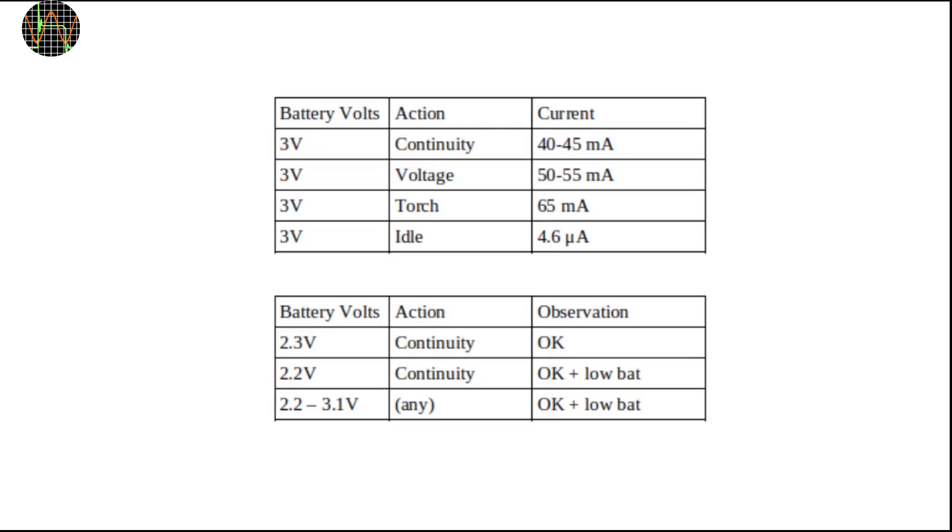At 3 volts, I measured a current between 40 and 65 milliamps. This fluctuates because of the beep and also because of the number of LEDs turned on. This current is quite high for AAA batteries, but flows only during probing and so only for very short periods. The standby current is only 4.6 microamps, which is very good.